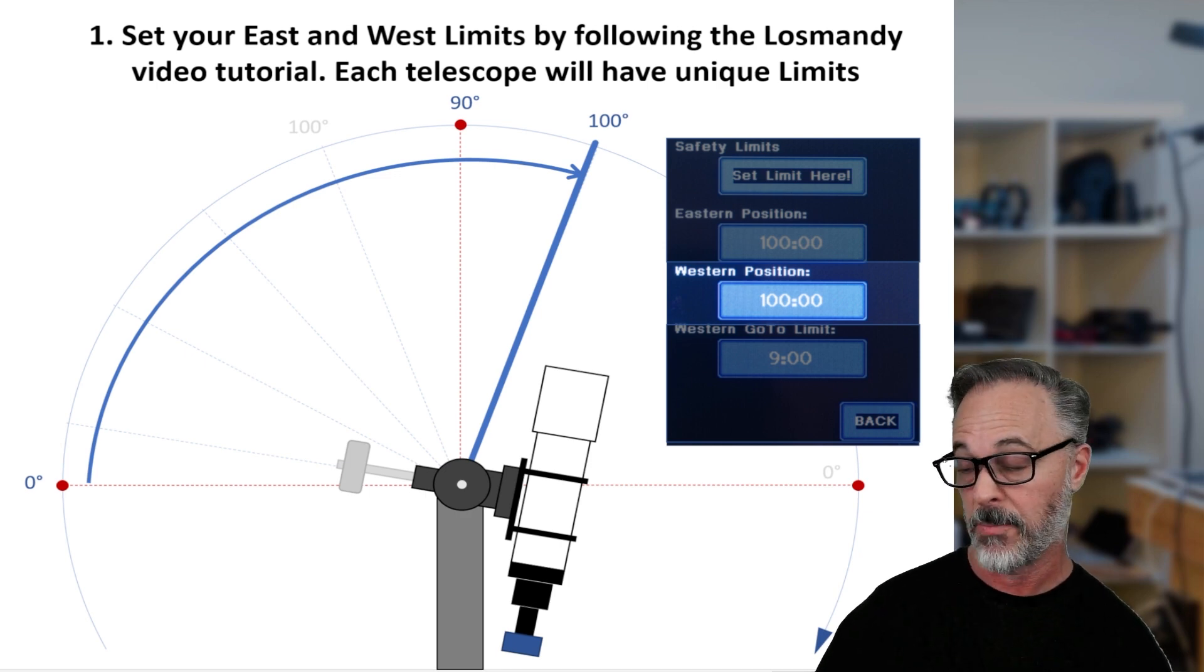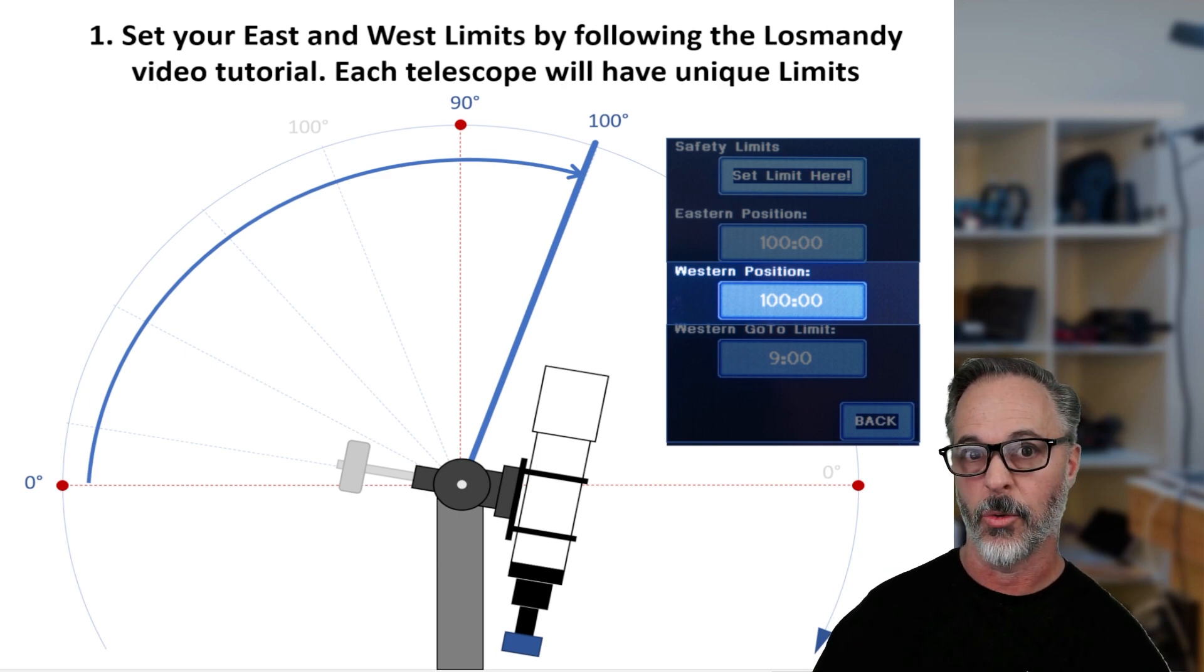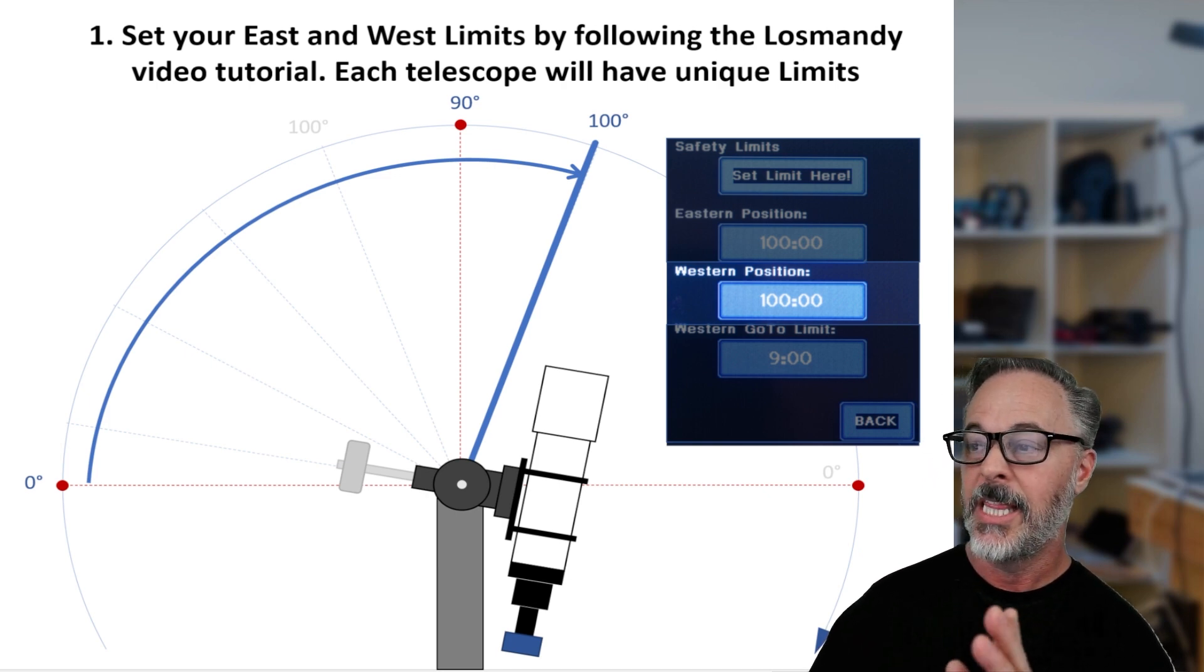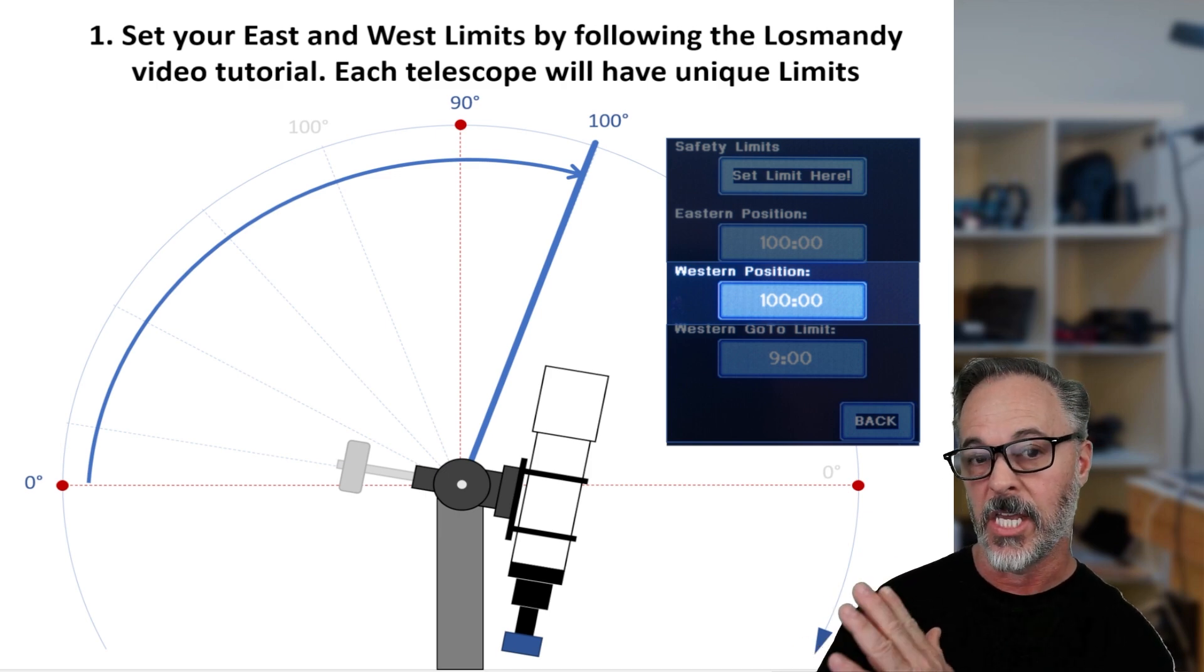So our eastern position now is 100 degrees, our eastern limit rather. Then the next thing we do is we set the western position and that's going to be in this example at 100 degrees. Of course yours specifically is going to be unique to your telescope, but let's just use these as examples.